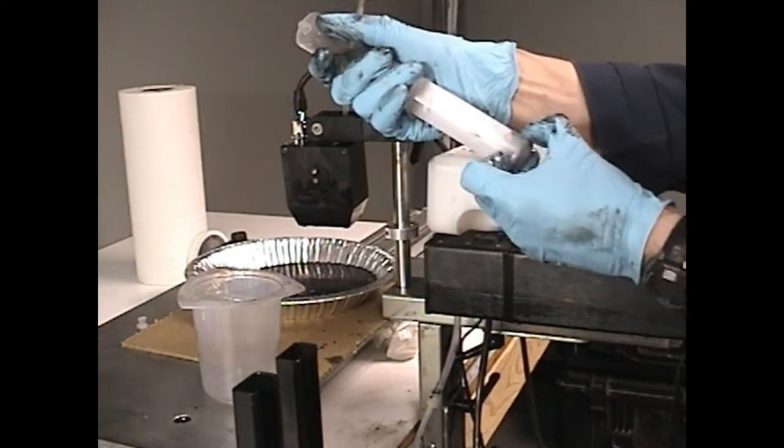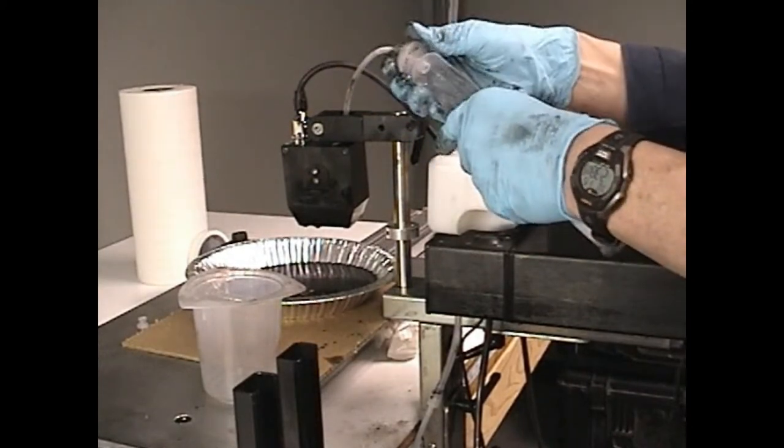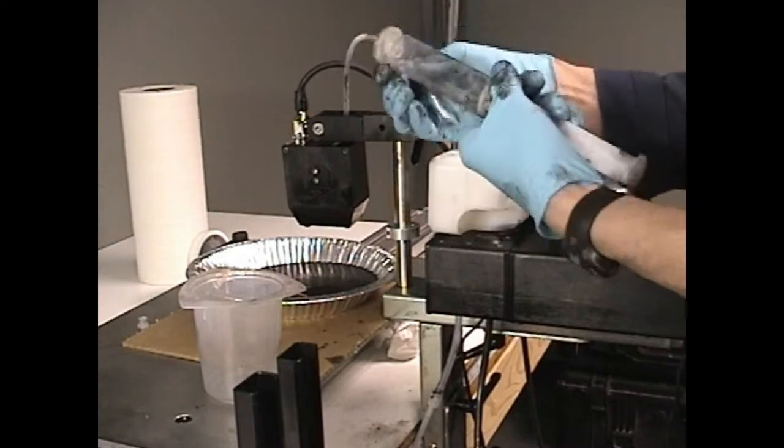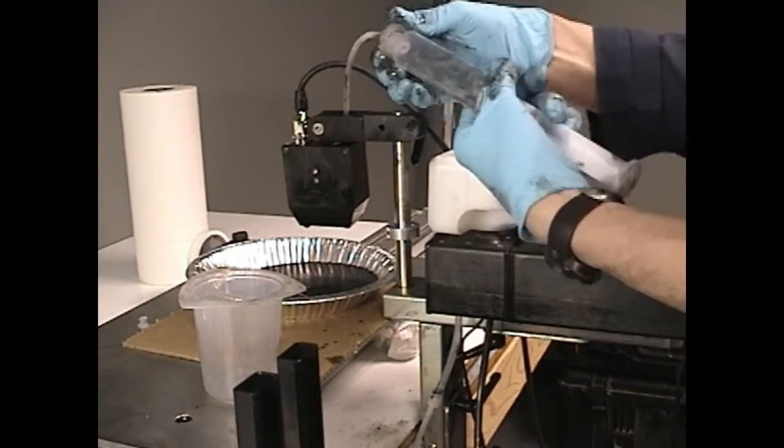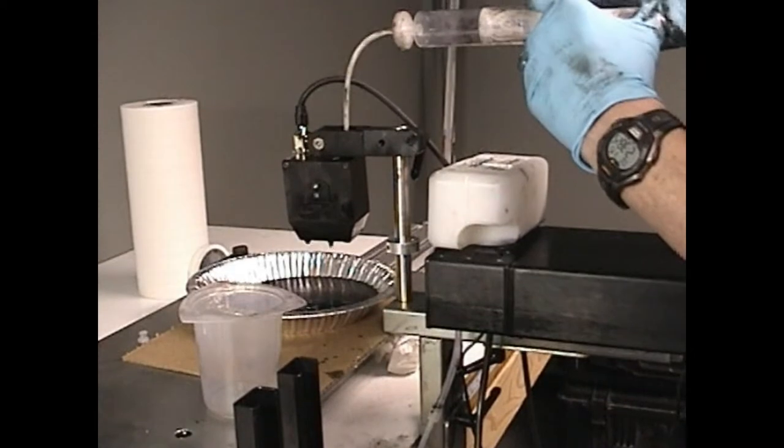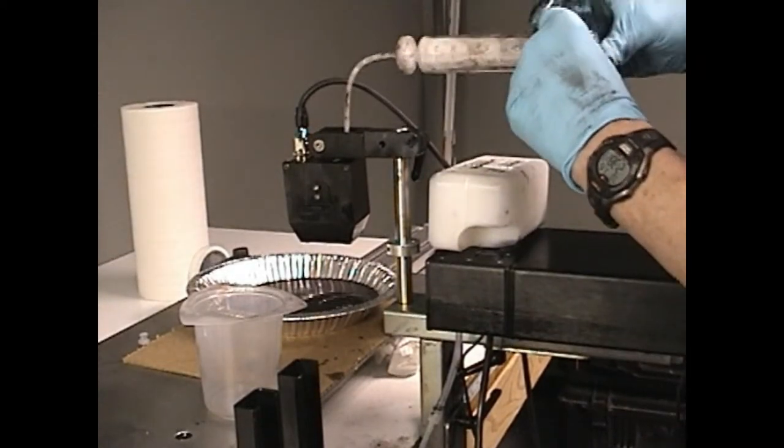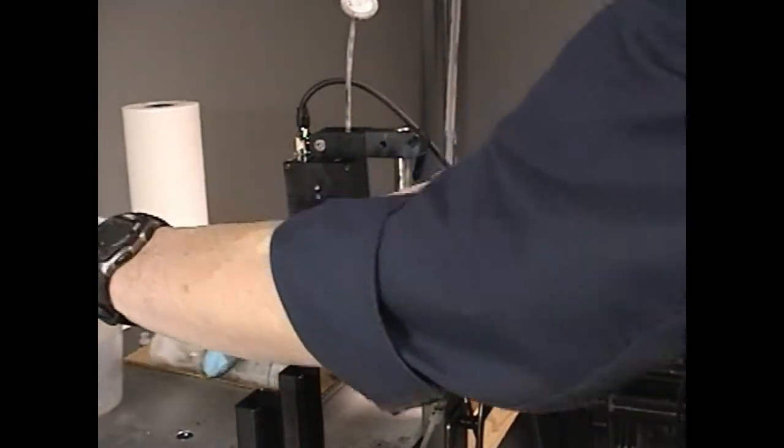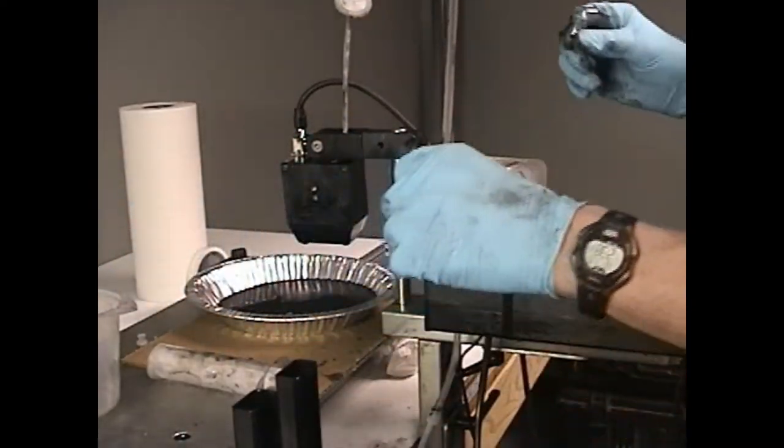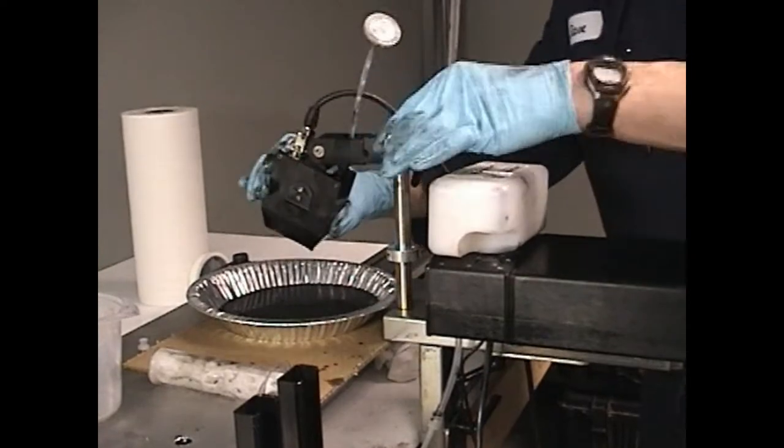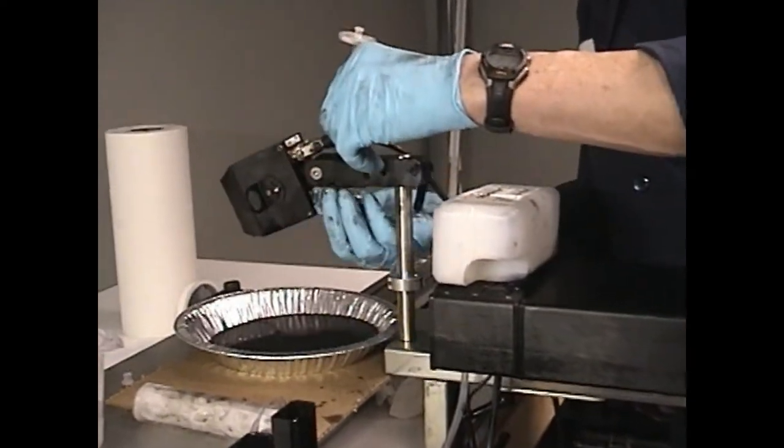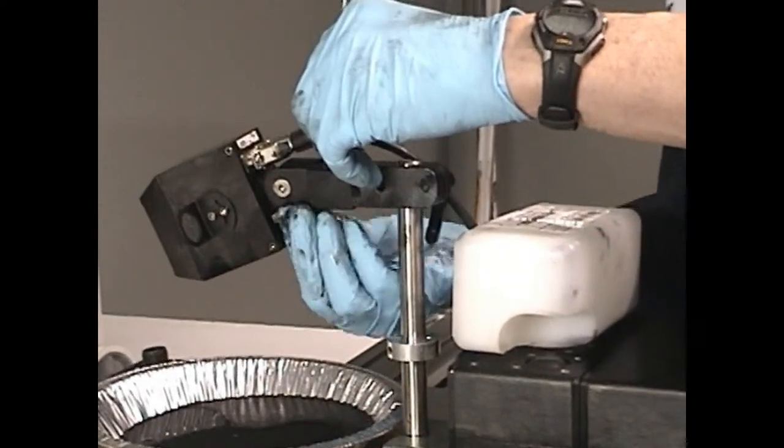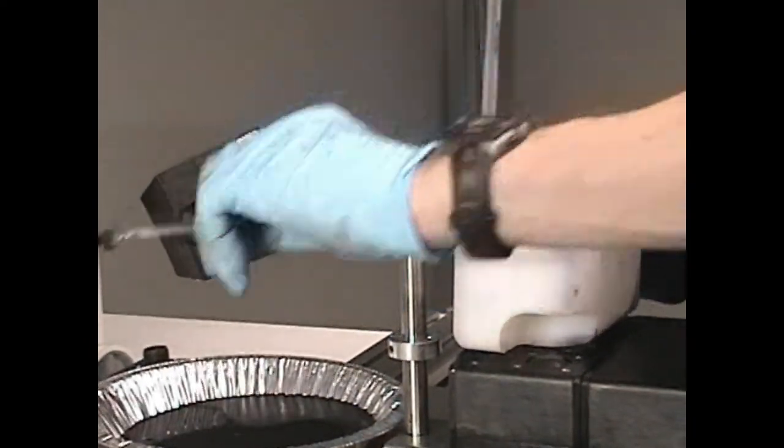Detach the syringe from the purge fitting and once again withdraw the plunger and fill the syringe with air. Reattach the syringe to the purge fitting and push air through the print head. Detach the purge fitting from the back of your print head and reattach the ink line.